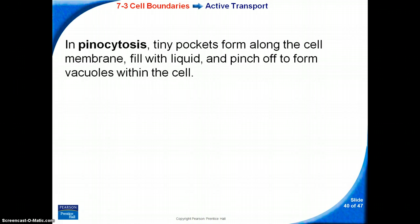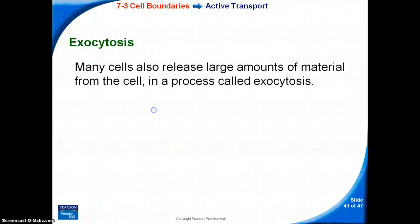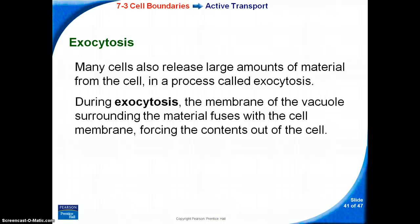In pinocytosis, tiny pockets form along the cell membrane, fill with liquid, and pinch off to form vacuoles within the cell. Many cells also release large amounts of material from the cell in a process called exocytosis. During exocytosis, the membrane of the vacuole surrounding the material fuses with the cell membrane, forcing the contents out of the cell.